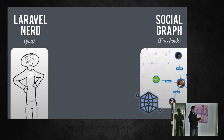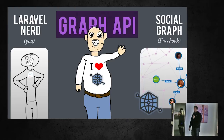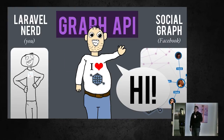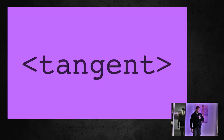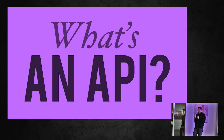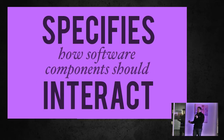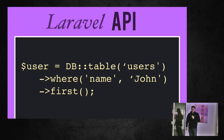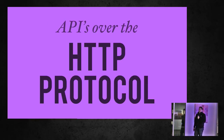So here's us, Laravel nerds, and there's them — the social graph. How do we access their data? Here comes the Graph API, which is what links us to the social graph. Just a quick tangent: what is an API? It stands for Application Program Interface, and it specifies how software components interact. You might be familiar with Laravel's Query Builder API — that's the API you use to interact with a database table.